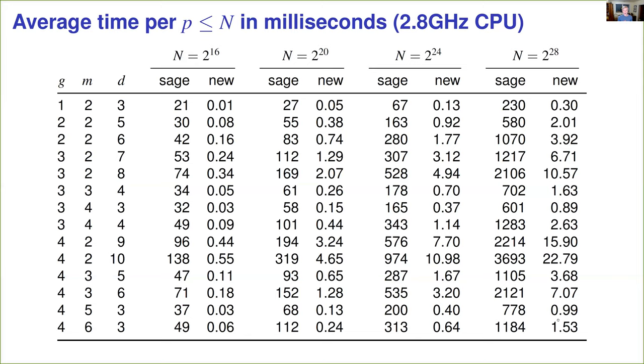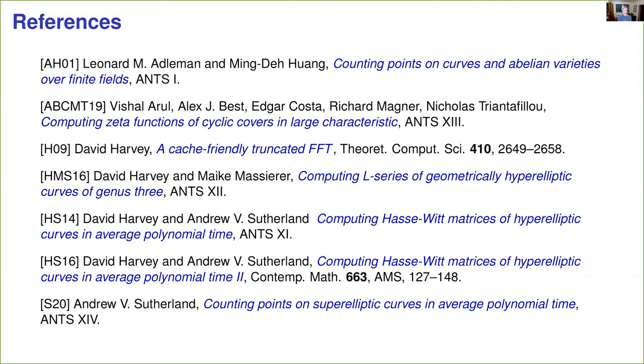I'll leave you with some references for some of the papers I referred to in this talk. And also, one parting thought. In ANTS-13, we saw a new algorithm for point counting on superelliptic curves that was an order of magnitude faster than the best-known previous algorithm, due to Minzlaff. And in ANTS-14, we've again seen an order of magnitude improvement over the algorithm in ANTS-13. So this makes me very much looking forward to ANTS-15, where I hope to see that someone has found a way to knock another order of magnitude off the running time of point counting on superelliptic curves. Thank you.